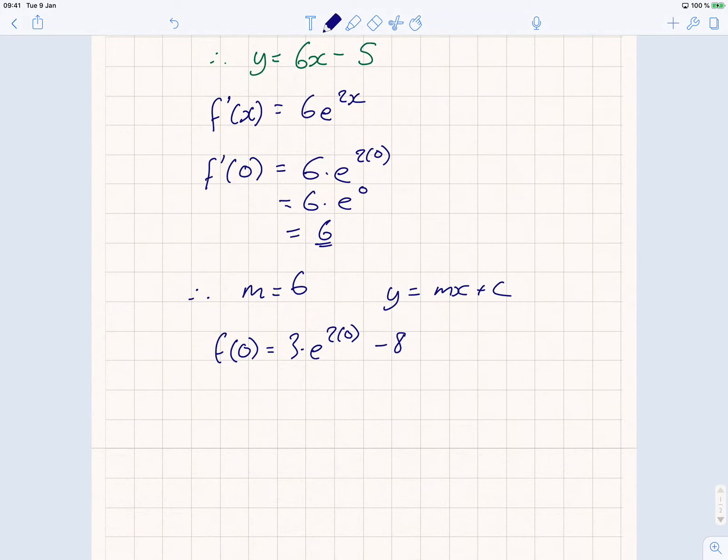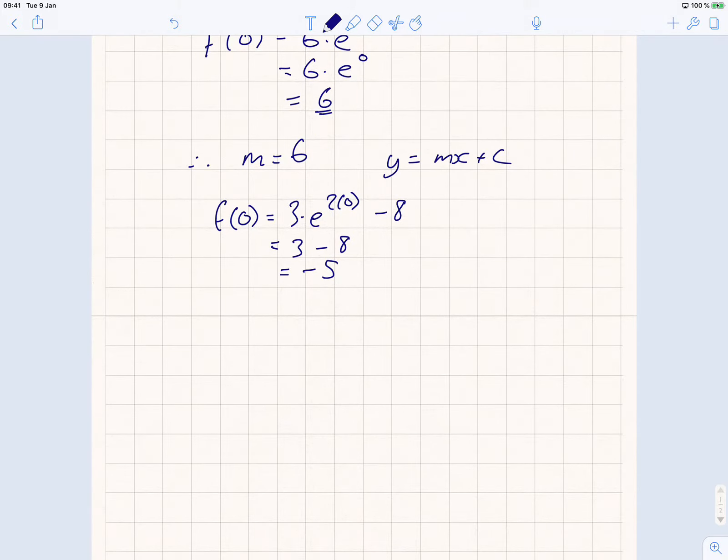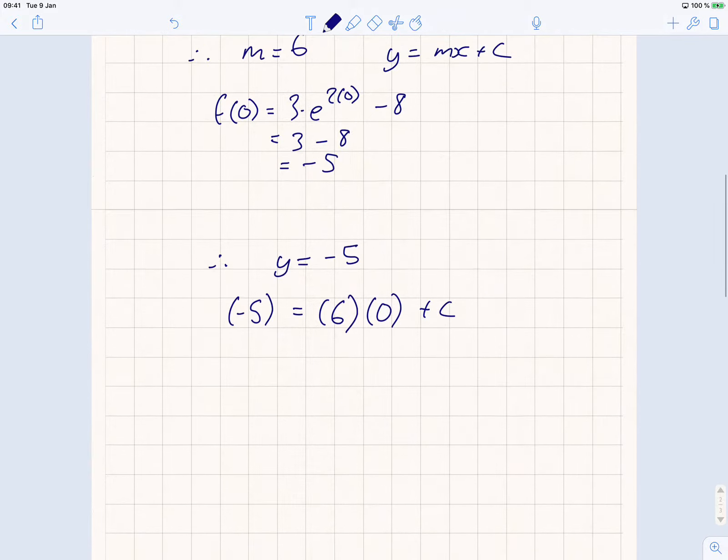So, I have 3 times 1, e to the 0 is 1, remember? So, it's equal to minus 5. So, therefore, I say y is equal to minus 5. Using y equals mx plus c, I've got minus 5, open brackets, m, which are calculated to be 6. And then I have x, which is 0, plus c. So, I have c is equal to minus 5, and therefore, I have y is equal to 6x minus 5. That's what I had before.